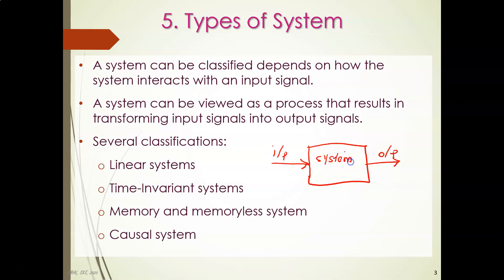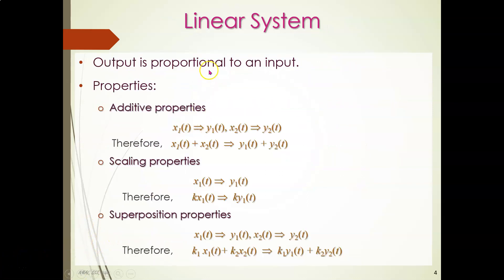We can classify systems into several classifications: the first is linear systems, the second is time-invariant systems, the third is memory and memoryless systems, and the fourth is causal systems. A system is said to be linear if the output is proportional to the input.